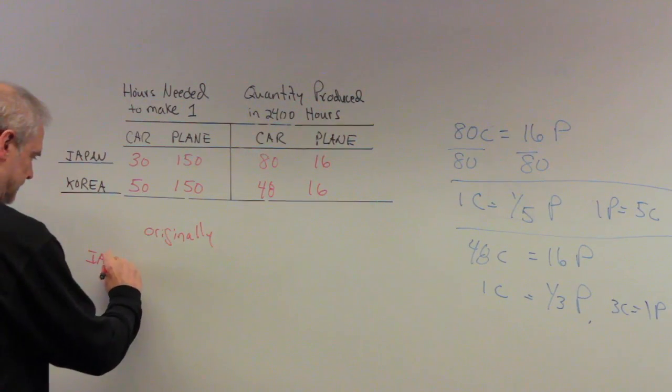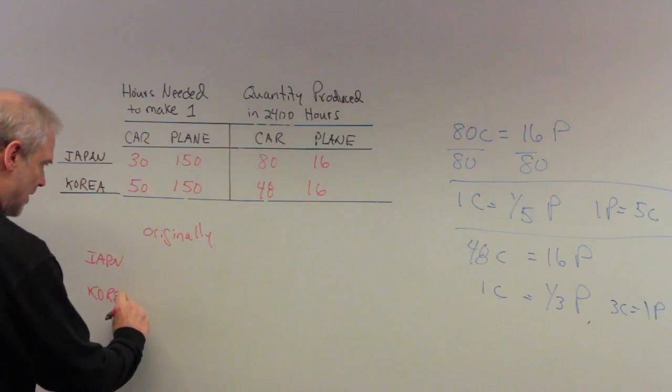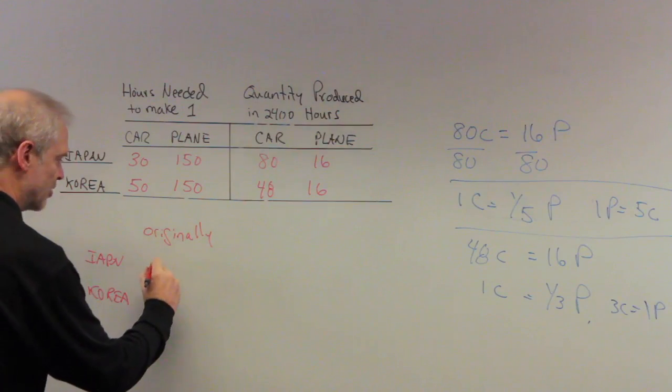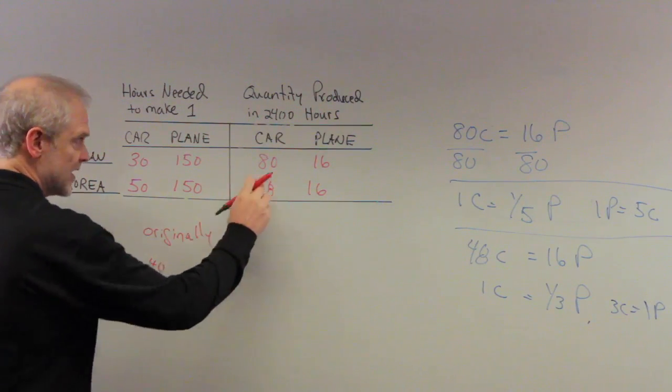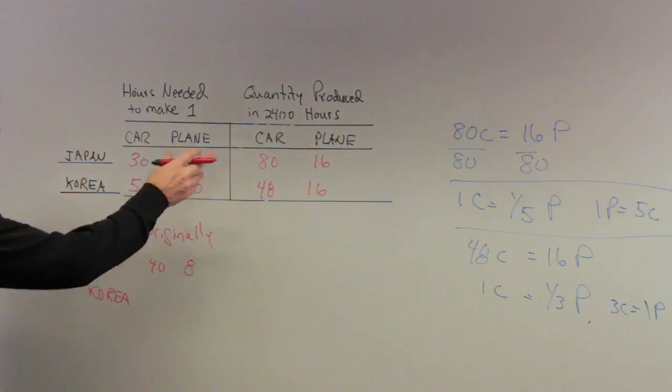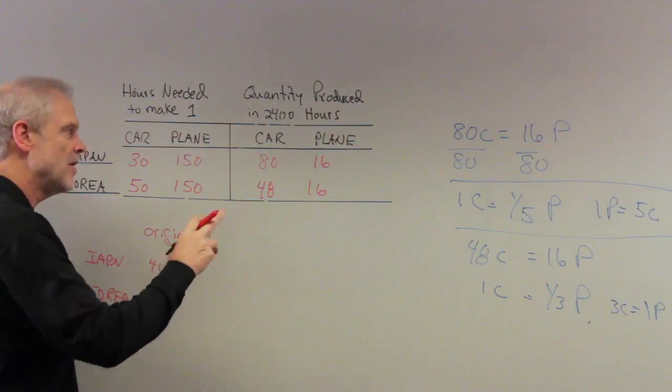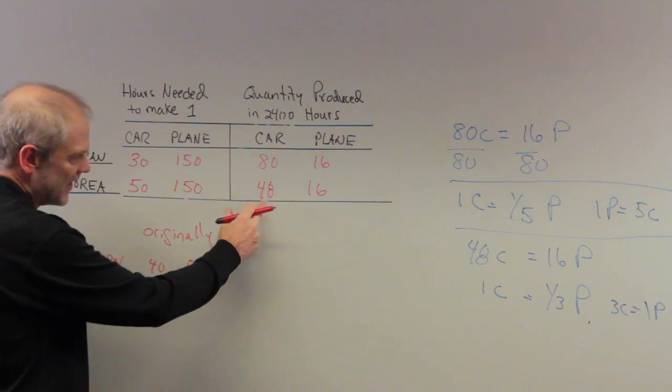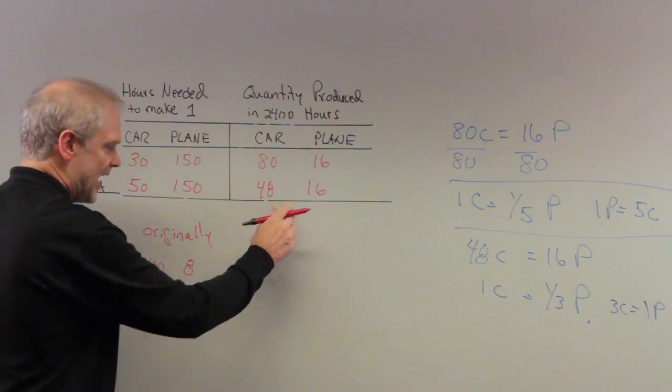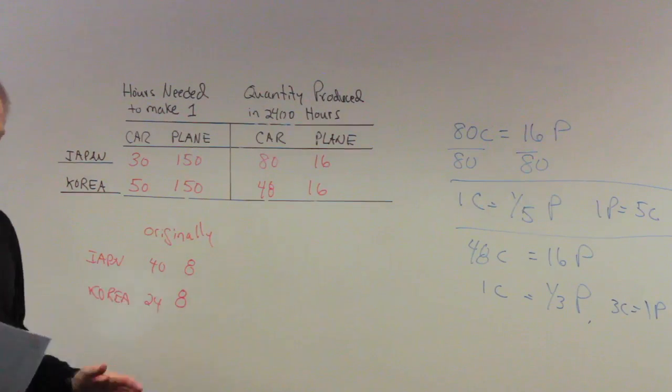If Japan spent half its time on cars and half its time on planes, Japan would have 40 cars, half this number, and it would have eight planes. If you go to Korea now, and they spend half their time on cars and half their time on planes, they will get half of this, which is 24, and they'll get half planes, which is eight. So now the question is, now they specialize. So now specialize.